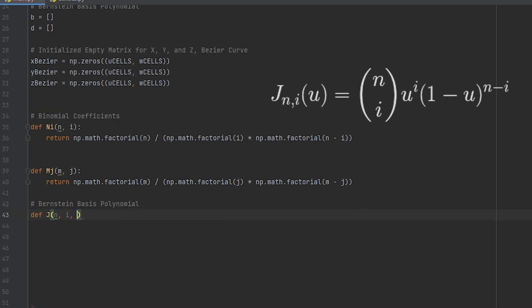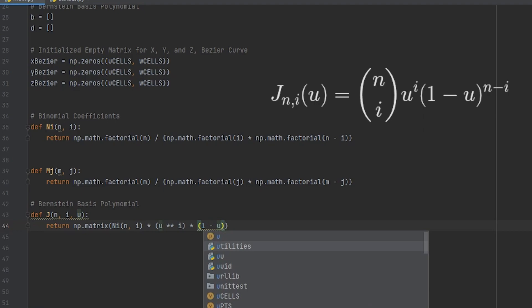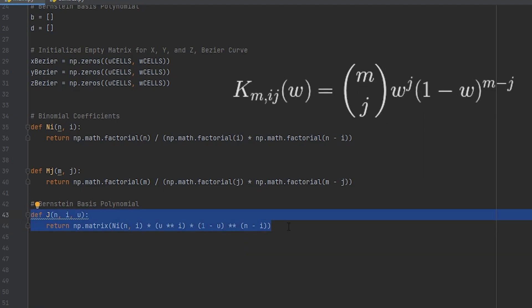Now the basis polynomial J will take N, I, and U and will return the result of the equation for basis polynomials. Here we can use NP matrix instead of NP array because it is necessary that this is represented as a 2D array even if it is just one row. Don't worry about it for now, just do the same for K and using the respective variables J, M, and W. I will explain why later.